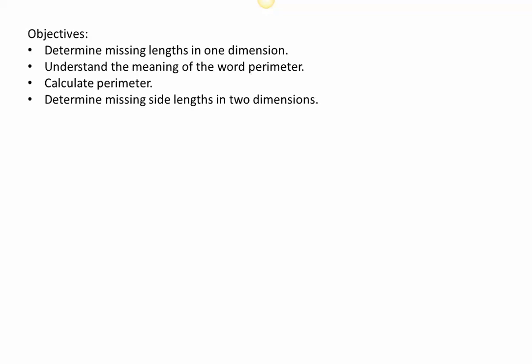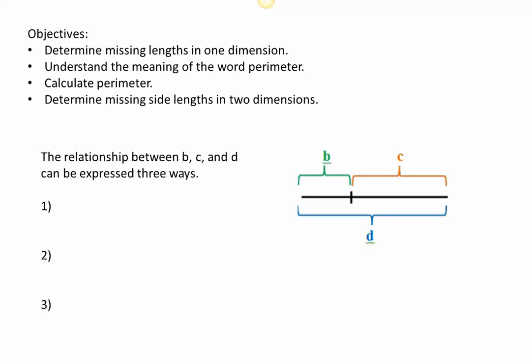Before we delve into the nitty-gritty, let's look at a figure. We have a line segment of length D split up into two smaller parts. It's easy to see that the small parts B and C come together to make the whole, which is D, so we can write that B plus C is equal to D. This is my favorite way to talk about two parts coming together to make a whole, but we could do it differently.